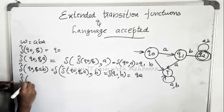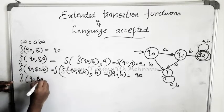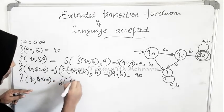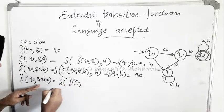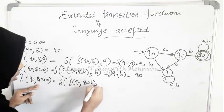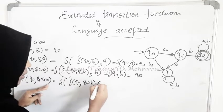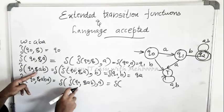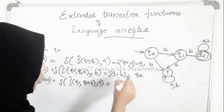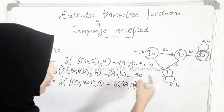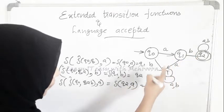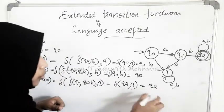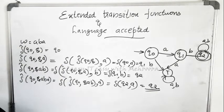We have one more character: delta-cap(q0, epsilon·A·B·A) is delta of delta-cap(q0, epsilon·A·B), comma A. Delta-cap(q0, epsilon·A·B) = q2, so delta(q2, A) = q2 itself. At the end of processing the string we got q2, which is a final state, so the string is accepted.